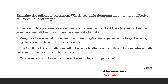B: Greg uses tokens as reinforcement. Each time Greg's client engages in the target behavior, Greg waits five seconds and then delivers the token. We do have reinforcement, so it is a reinforcement strategy. However, Greg is waiting to deliver the token. Our rule: we want to deliver reinforcement quickly, as close to the target behavior as possible. There's no reason to wait five seconds. Greg runs the risk of reinforcing something else. B is better than A, but we can find something better.